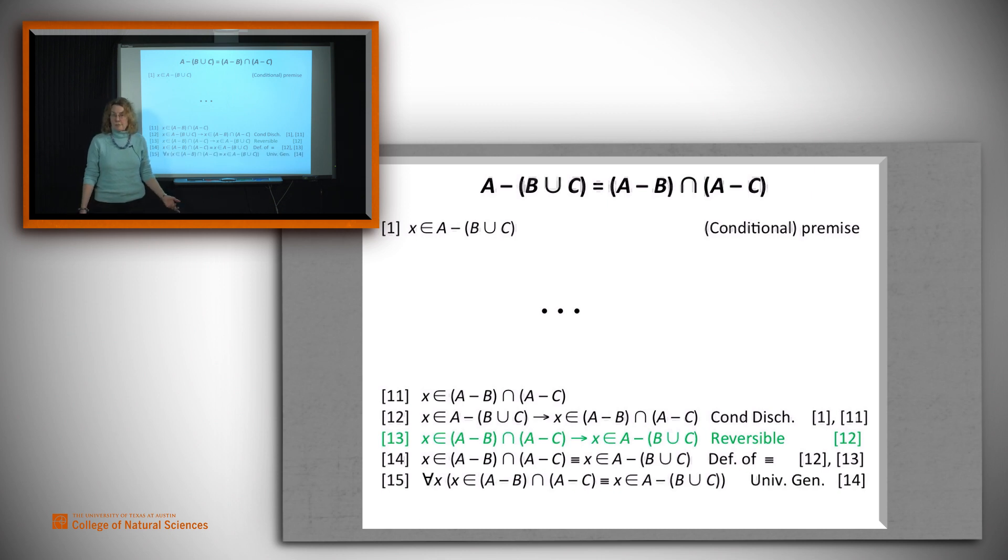We can use universal generalization to say, well, then it has to be true for every value if it was true for this arbitrary one. And then we can say, the definition of set equality is that you're equal just in case you contain the same element. So this is our proof. But the guts of it go here. How do we do that part? So let's focus on that.